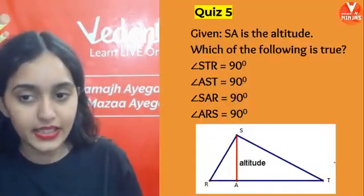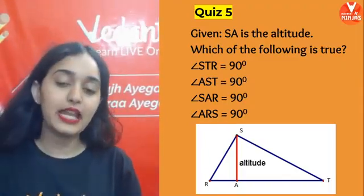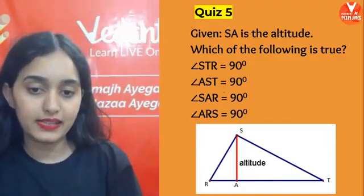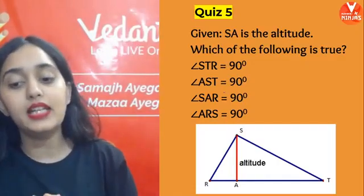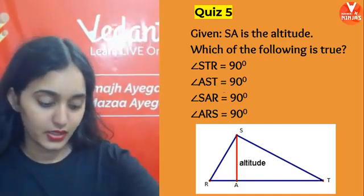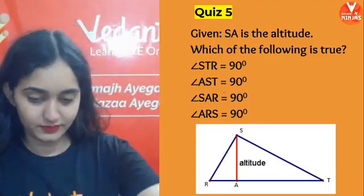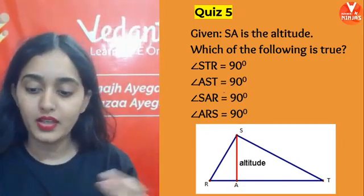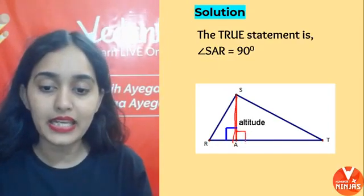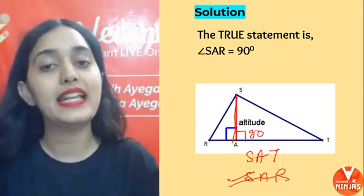Last quiz question: SA is the altitude. Which of the following statements is true? Is angle STR 90°, AST 90°, SAR 90°, or ARS 90°? You have 30 seconds. The correct option is SAR — since SA is the altitude, it makes a 90 degree angle with the base, so angle SAR is 90 degrees.